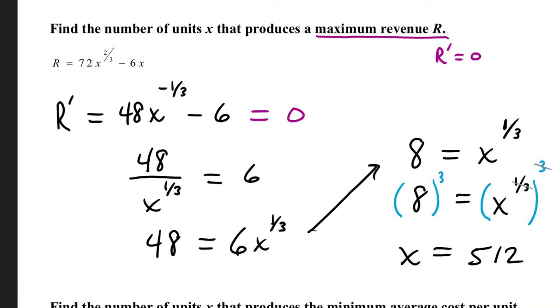Hey everyone, let's look at business and economic applications part 1. Let's find the number of units x that produces a maximum revenue R. Capital R is given as 72x to the two-thirds power minus 6x.